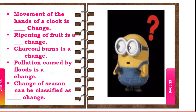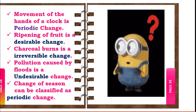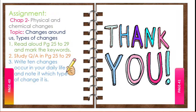This is the question time. Read the questions and prepare your answers, or write the answers in your rough note — the answers will be shown in the next slide. Answers: movement of the hands of a clock is a periodic change; ripening of fruit is an undesirable change; burning of charcoal is an irreversible change; pollution caused by floods is an undesirable change; change of season is a periodic change. Hope all of you understood very well. This is the assignment for you — try to study. Thank you, students.